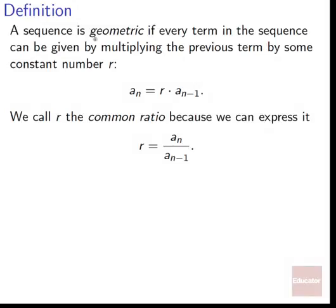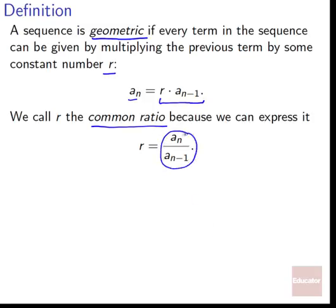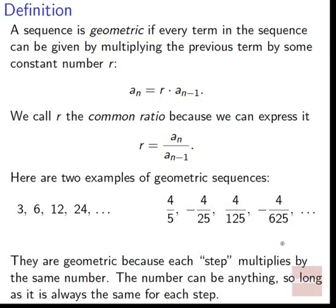Geometric sequences commonly appear in real life. Since geometric sequences are based on ratios — we're always multiplying by the same thing — and ratios occur a lot in the world, they give us a way to describe a wide variety of things. In this lesson, we'll begin by going over what a geometric sequence is and how we can talk about them in general. Then we'll look into formulas for geometric series to make adding up a bunch of terms really easy and fast.